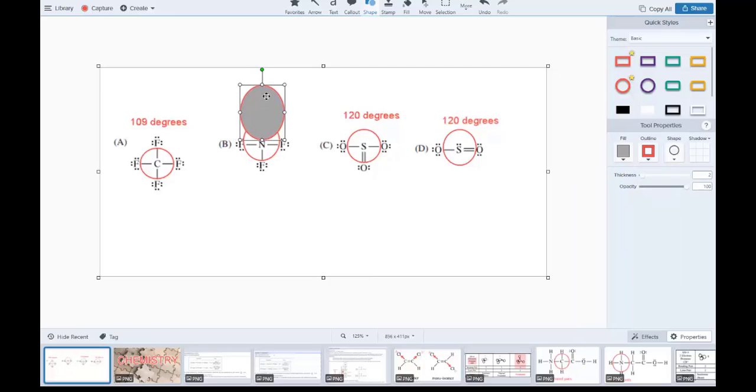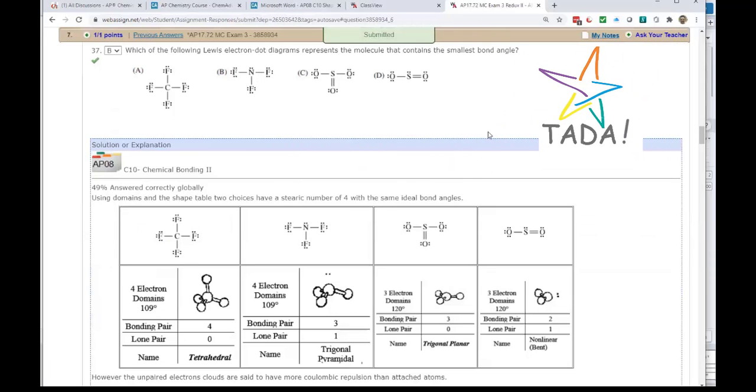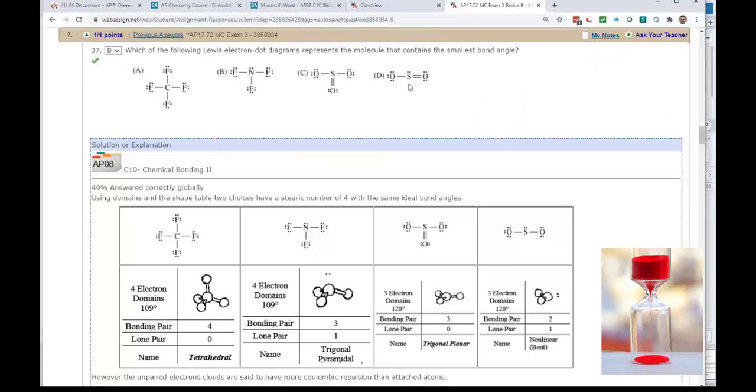The answer is B because of this cloud of electrons repelling things and pushing things down, producing the smaller angle. The fast way to answer this: immediately see three things around this at 120, three around that at 120, then these two at 109 - but this one has a cloud of electrons. You'd answer this in less than 30 seconds, leaving more time for other questions. That's how to do shapes of molecules.